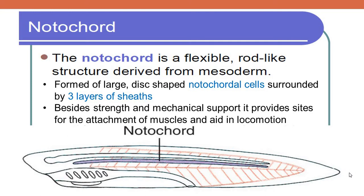A chordate is nothing but an organism which has got a backbone in any of its life stages. It doesn't mean that the notochord is present throughout the life. We human beings have got no notochord, but we have got a backbone that is called the vertebral column. But we too had a notochord in our embryonic stage. That's why we are classified into Phylum Chordata. All chordates have got a notochord in any of their life stages.